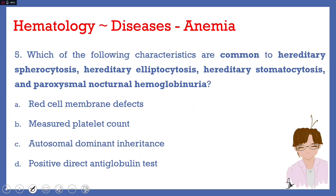Number five, the final question: which characteristic is common to hereditary spherocytosis, hereditary elliptocytosis, hereditary stomatocytosis, and paroxysmal nocturnal hemoglobinuria? Letter A, red cell membrane defects. Letter B, decreased platelet count. Letter C, autosomal dominant inheritance. Letter D, positive direct anti-globulin test. The answer is letter A, red cell membrane defects — they are all red cell membrane defects.